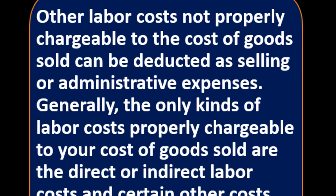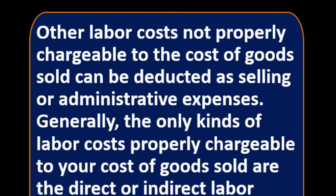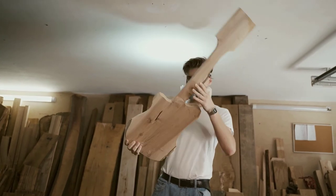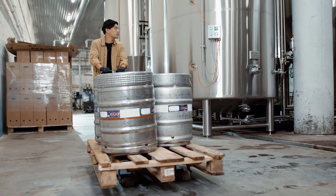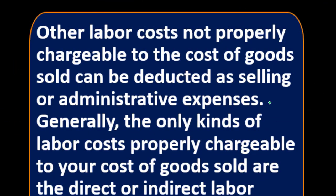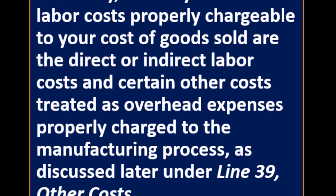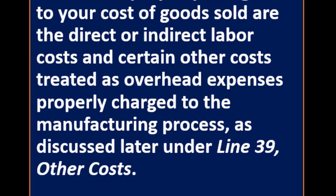Other labor costs not properly chargeable to cost of goods sold can be deducted as selling and administrative expenses. For example, in a guitar manufacturing company: people working directly on the guitars are direct labor; people working in the factory but not tied directly to specific guitars are indirect labor or overhead; people in admin, accounting, or sales departments are not in cost of goods sold but in administrative and selling expenses. Generally, only direct or indirect labor costs and certain overhead expenses properly charged to the manufacturing process are included in cost of goods sold.